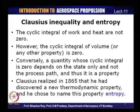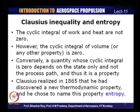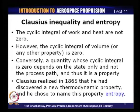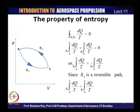We already know that cyclic integrals of work and heat are not zero, but cyclic integrals of properties like volume or pressure are zero. A quantity whose cyclic integral is zero depends only on the state and not on the process path — it is therefore a property. Clausius realized in the late 1860s that since the cyclic integral of dq/T equals zero for a reversible process, this must be a property of the system. He named this property entropy, denoted by S, formally defined in 1865.